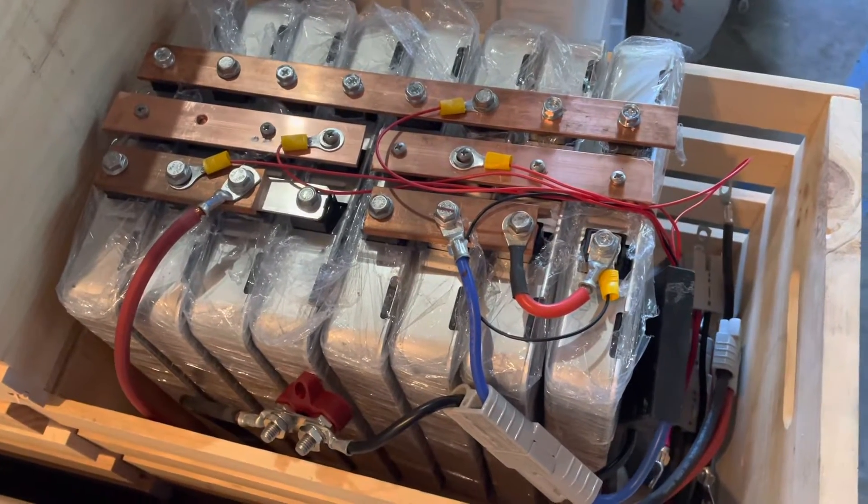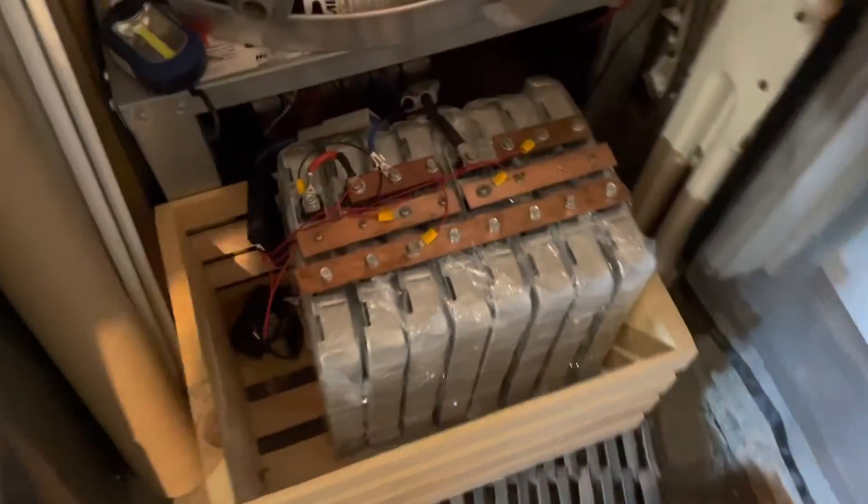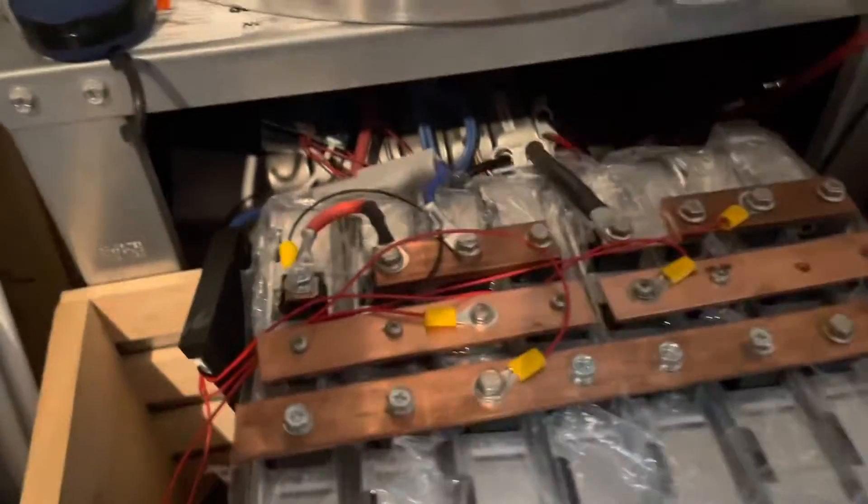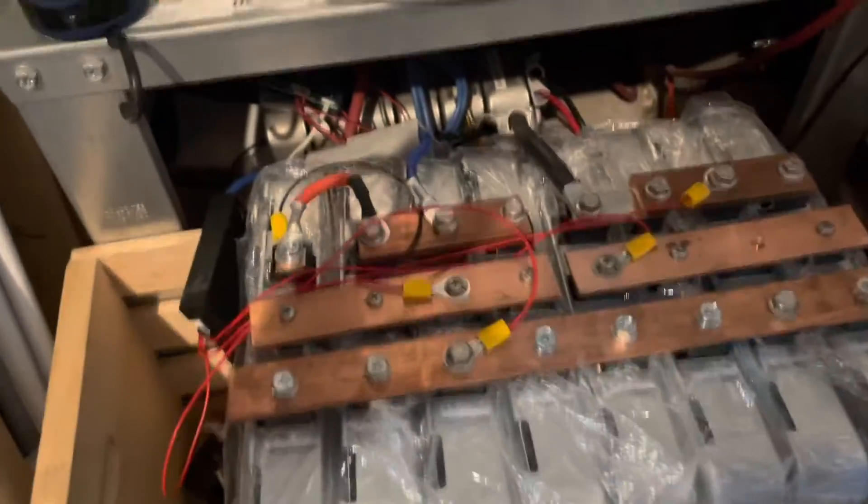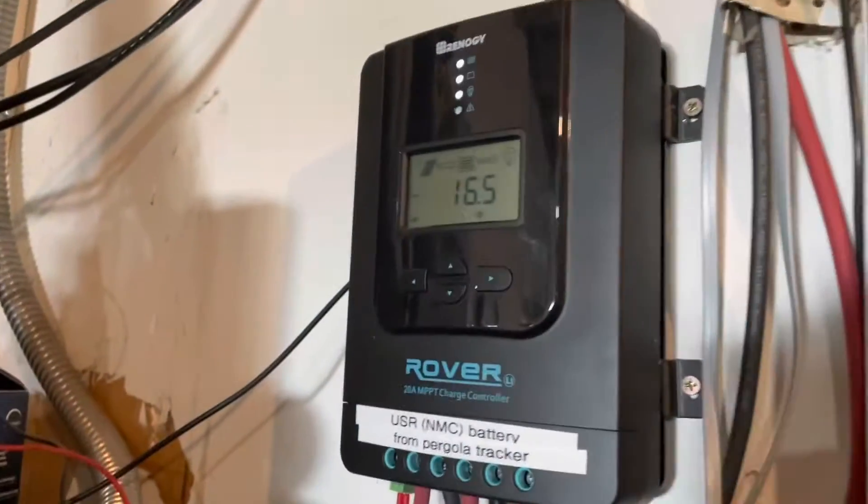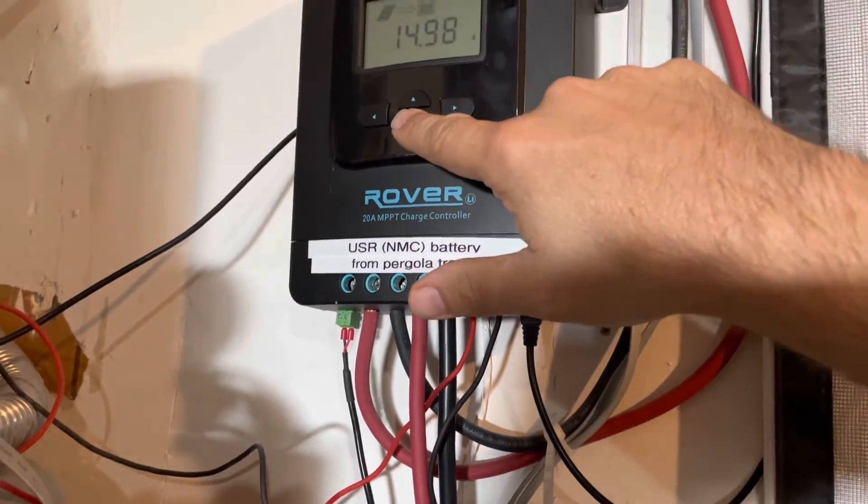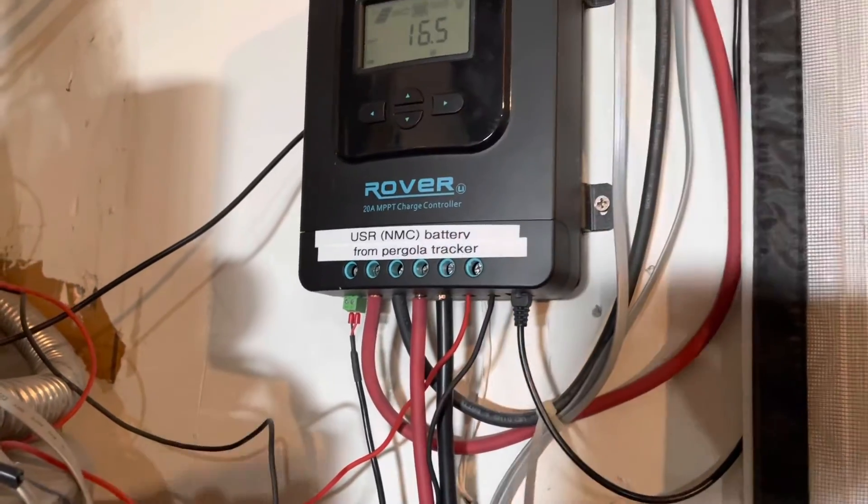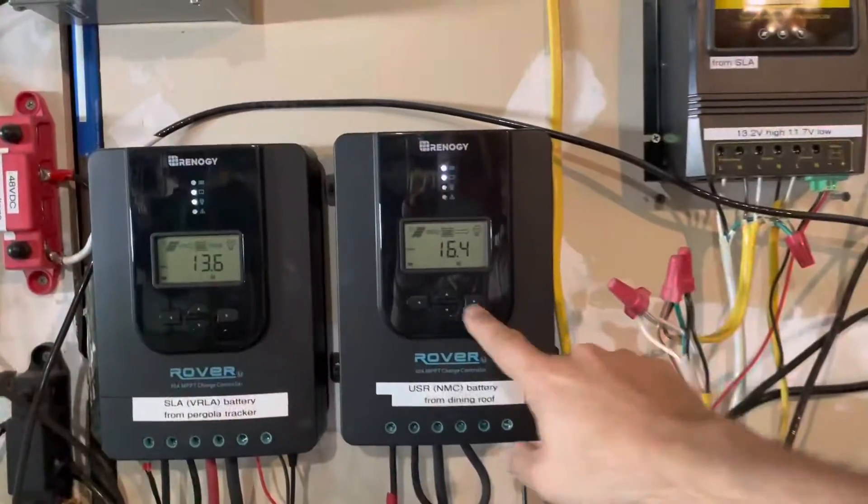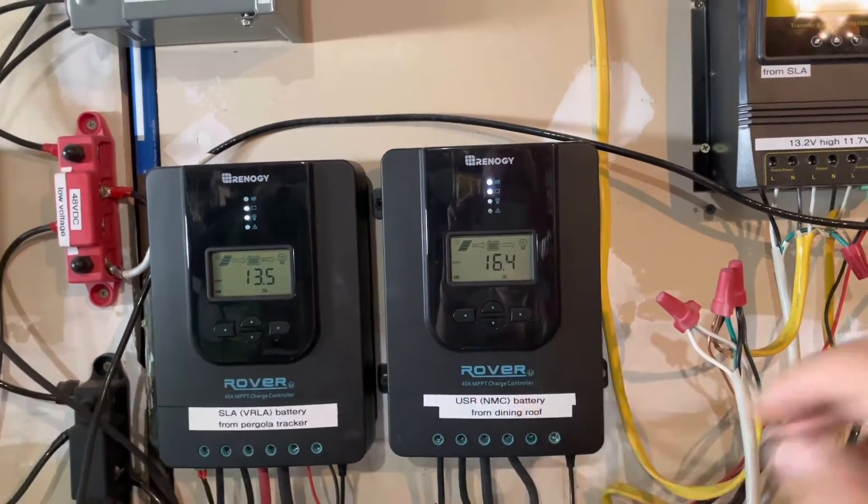Okay, so I have temporarily spliced it in parallel with my other battery and it's charging away. So this charger is running at 15 amps, this second charger is doing 16 amps.